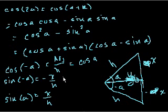So sine of minus a is equal to minus 1 times x over h, right? Or this is just the same thing as, I mean, if we could multiply both sides of this by minus 1, minus x over h. So sine of minus a is equal to minus sine of a.